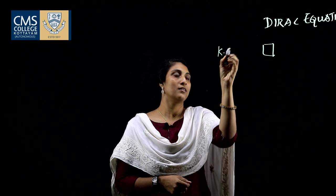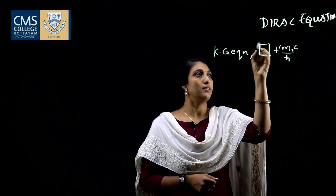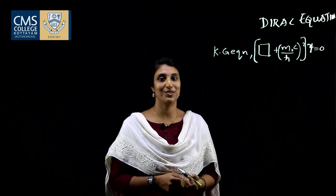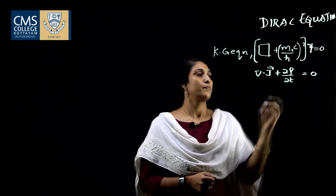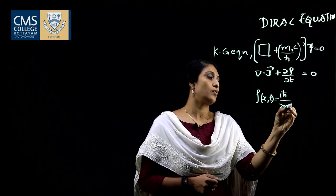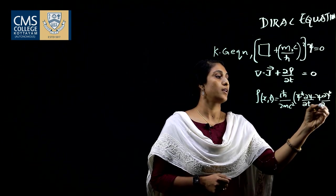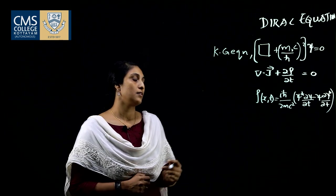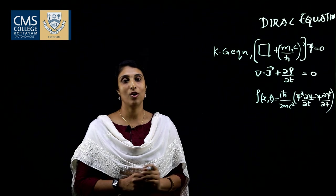The KG equation is the d'Alembert operator plus (m₀c/ℏ)² acting on ψ equals 0. We know that the KG equation satisfies the continuity equation of the form ∇·j + ∂ρ/∂t = 0. And ρ(x,t) is of the form (iℏ/2mc²)(ψ* ∂ψ/∂t − ψ ∂ψ*/∂t). That is, ρ(x,t) is not in the form of ψ*ψ.